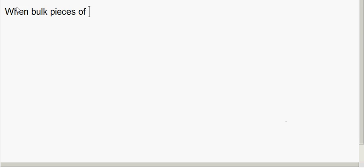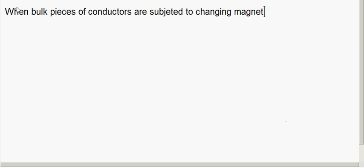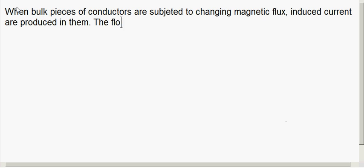When bulk pieces of conductors are subjected to a changing magnetic flux or changing magnetic field, induced currents are produced in them. The flow pattern of these currents resembles swirling eddies in water.